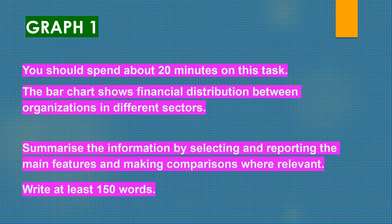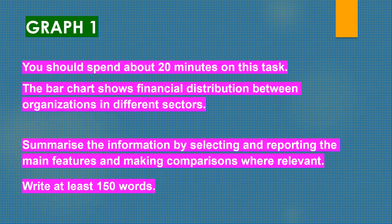Now let's take a look at graph 1. You should spend about 20 minutes on this task. The bar chart shows financial distribution between organizations in different sectors. Summarize the information by selecting and reporting the main features and make comparisons where relevant. Write at least 150 words.